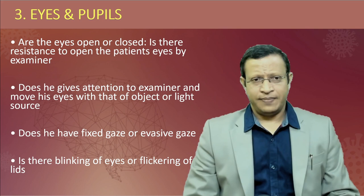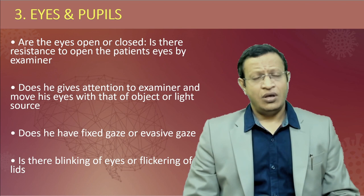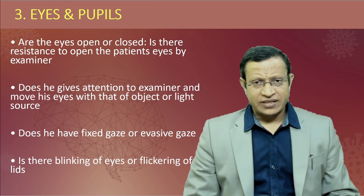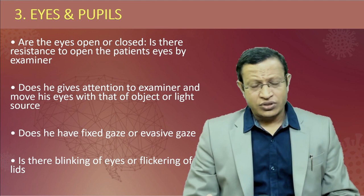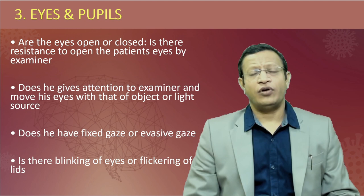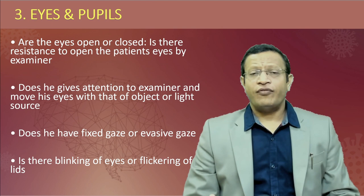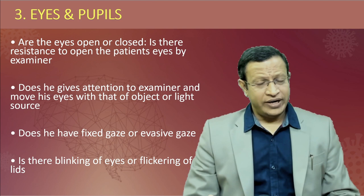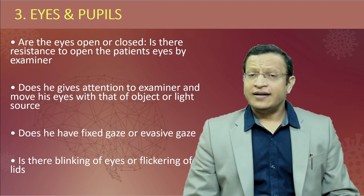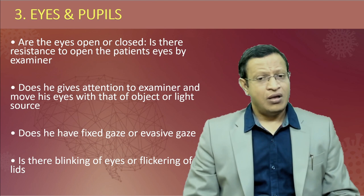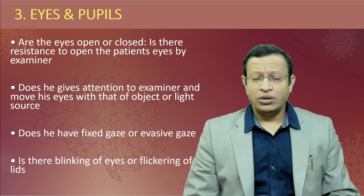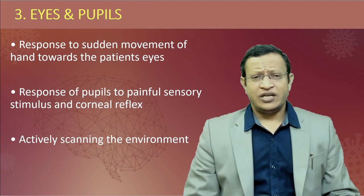Moving to the third component: eyes and pupils. Are the eyes open or closed? If closed, does the patient resist when you try to open the eyes? Request them to open their eyes. Does the patient give attention to the examiner? Does the patient follow an object like a ballpen, as in a neurological examination, or follow a light source? Does the patient have a fixed gaze or avoid eye contact? In malingering, patients may look in the opposite direction.